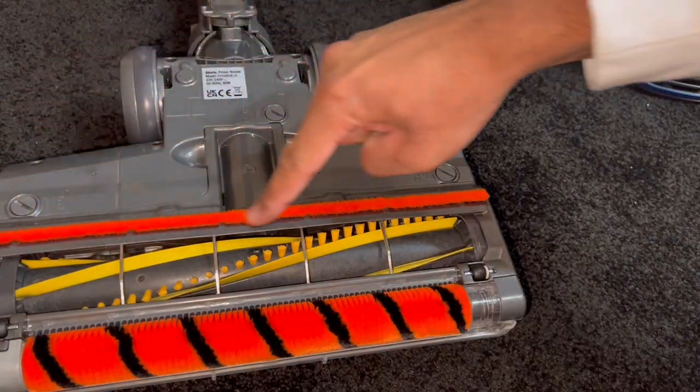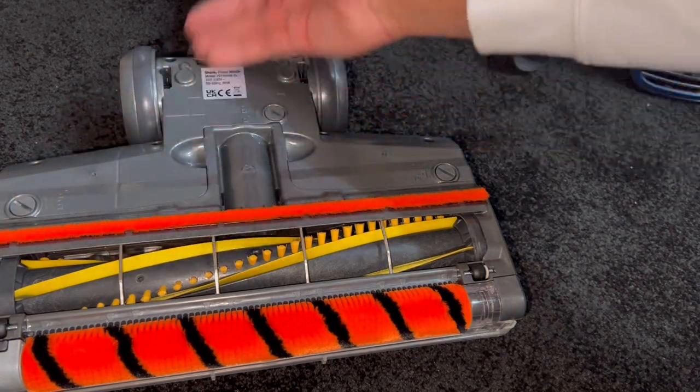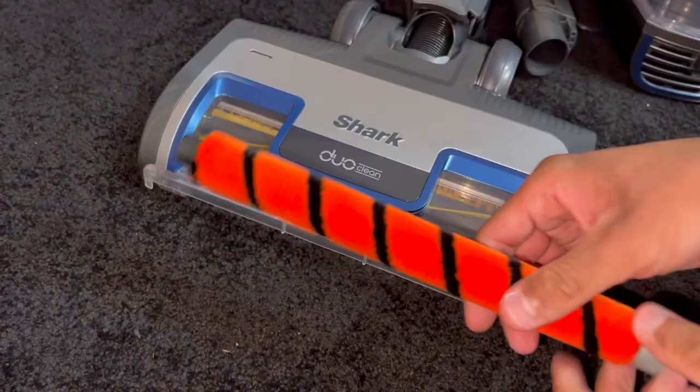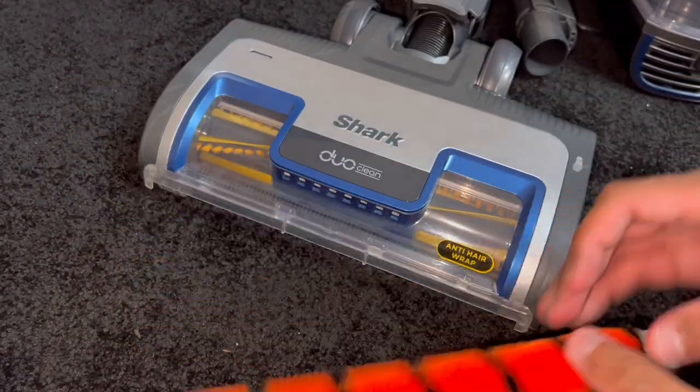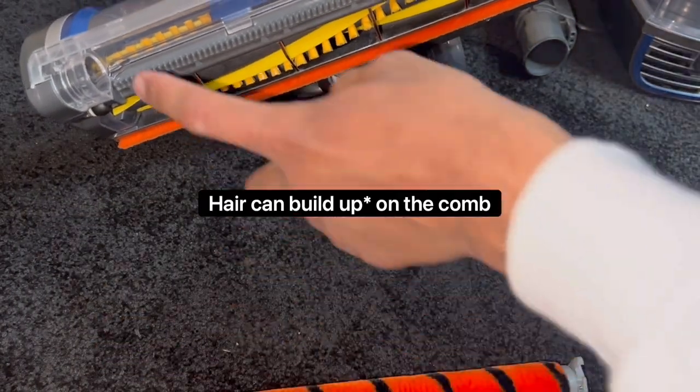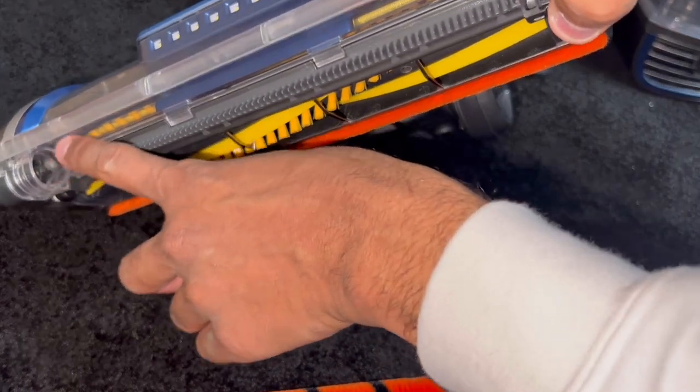You've got a nice felt strip on the back which helps prevent any scattering of large debris. The Duo Clean front roller can be removed by pushing on this orange release catch. Your roller just pops out. There's a cone behind here for this roller specifically, so hair can get wrapped around there. Check inside there as well.